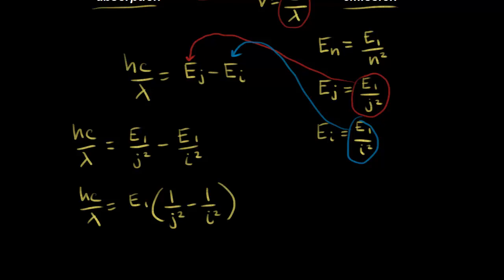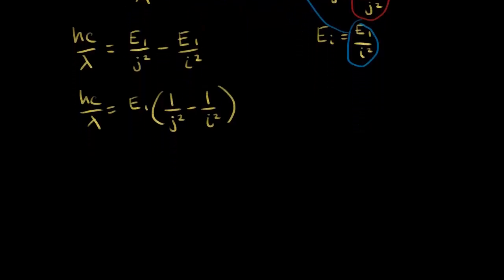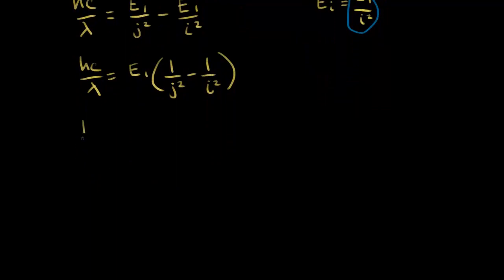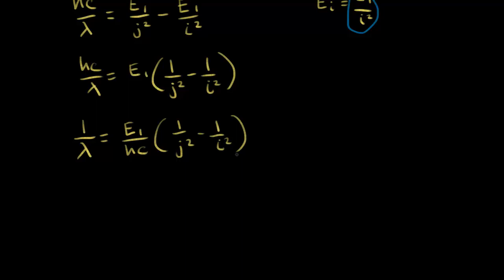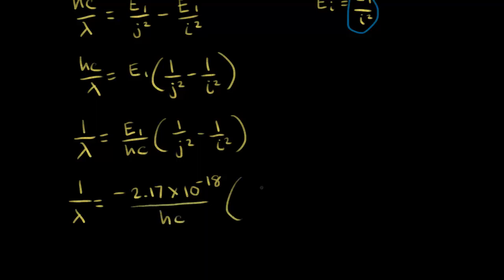Dividing both sides by hc: 1/λ = (E1/hc) × (1/j² − 1/i²). Plugging in E1 = −2.17 × 10⁻¹⁸ joules, we get: 1/λ = (−2.17 × 10⁻¹⁸ / hc) × (1/j² − 1/i²).